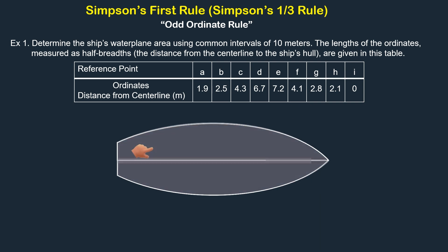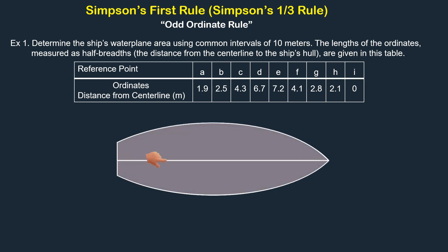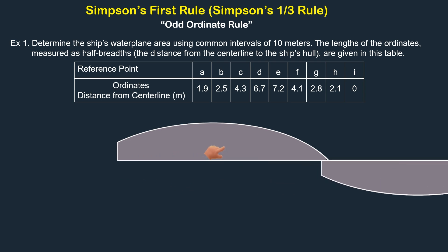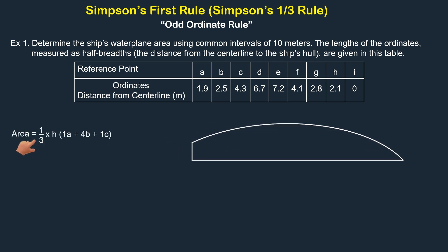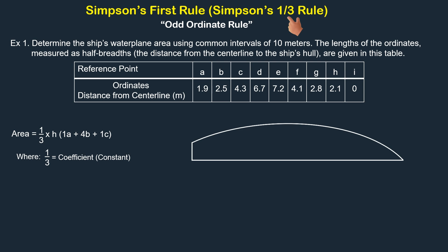We are going to calculate the ship's shaded area. Since the ship is symmetrically divided along the centerline, we only need to determine half of this area. Once calculated, we will double it to obtain the total waterplane area. This is the formula for calculating the area using Simpson's First Rule, where one-third is the coefficient — a constant value — which is the reason why it is also known as Simpson's One-Third Rule.